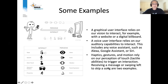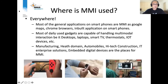Where is multimodal HCI used? It's pretty much everywhere. Most general applications on smartphones are multimodal, such as Google Maps, browsers, and inbuilt smartphone applications. Even games use it — on a Nintendo Switch playing Breath of the Wild, you use gyroscopes to aim your bow and a button to fire an arrow. That's already a multimodal human-computer interface. Smartwatches work the same way.